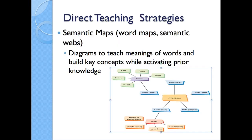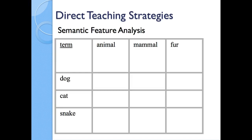Semantic maps, also called word maps or semantic webs, use prior knowledge to teach the meaning of words, having students interact with the different connections they have to that word. The semantic features analysis is a good activity for a set of words that share at least one characteristic in common — often seen in science or social studies units. The teacher creates a grid identifying the traits of target words, with target words listed along the vertical axis, and students place a plus or minus sign indicating whether each trait applies.